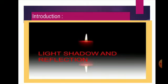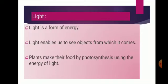So first, about light. Light is a form of energy and it is needed to see things. We cannot see objects in the darkness of night — we need a source of light that makes the object visible. During the day, sunlight allows us to see objects. But at night, it is the light of a torch, electric bulb or tube light which enables us to see. Light enables us to see objects from which it comes or from which it is reflected. We also know that plants make their food by photosynthesis using the energy of light.